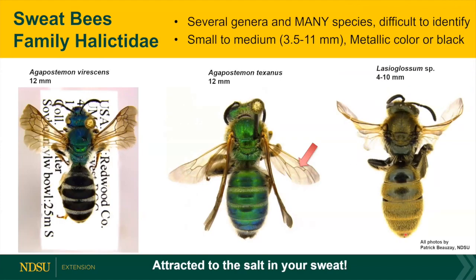Sweat bees — Halictidae — are another one of my favorites. As the name implies, they're attracted to your sweat and feed on some of the nutrients in it. They're very beautiful — Agapostemon is a beautiful metallic green that's really brilliant in the sun. Agapostemon virescens is one example. They're very difficult to identify, and the taxonomy of this group is not very well defined.